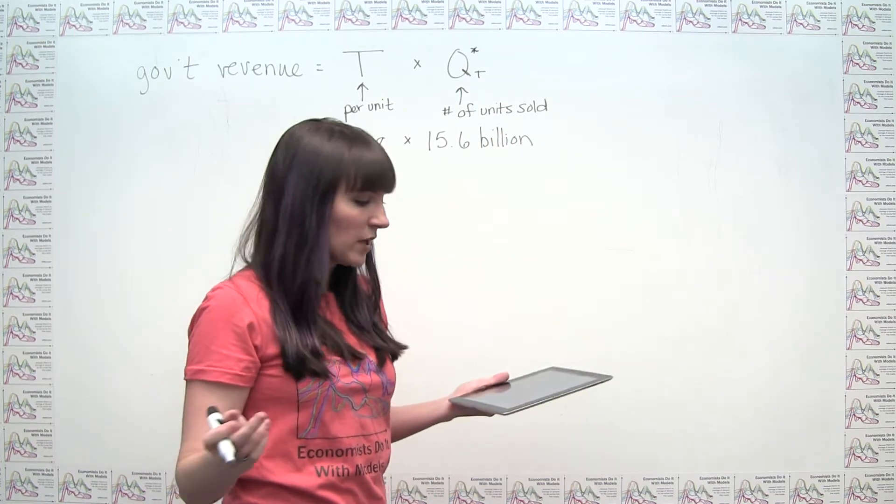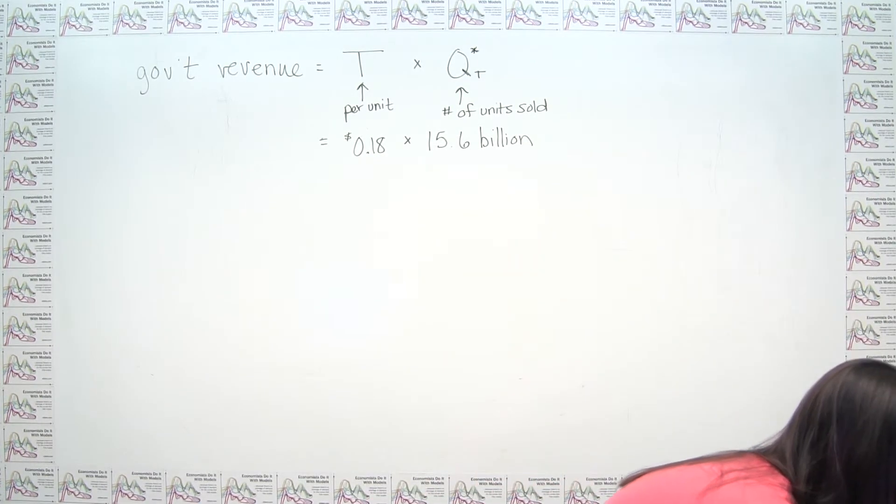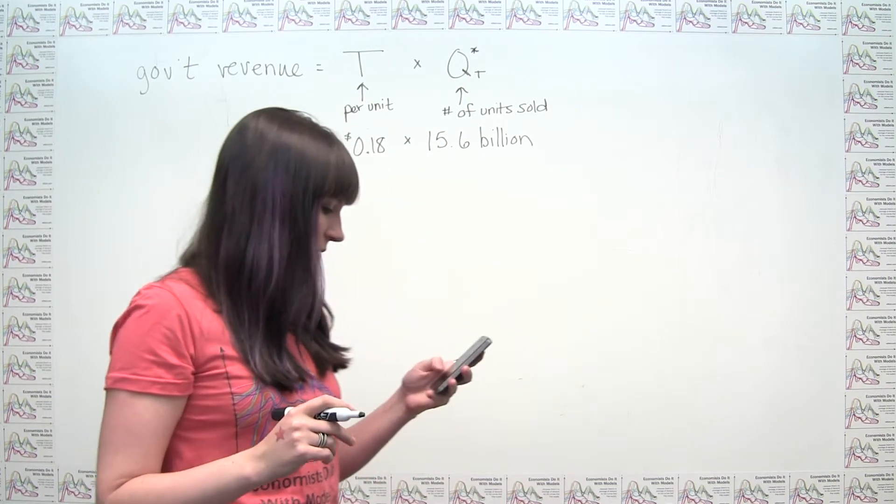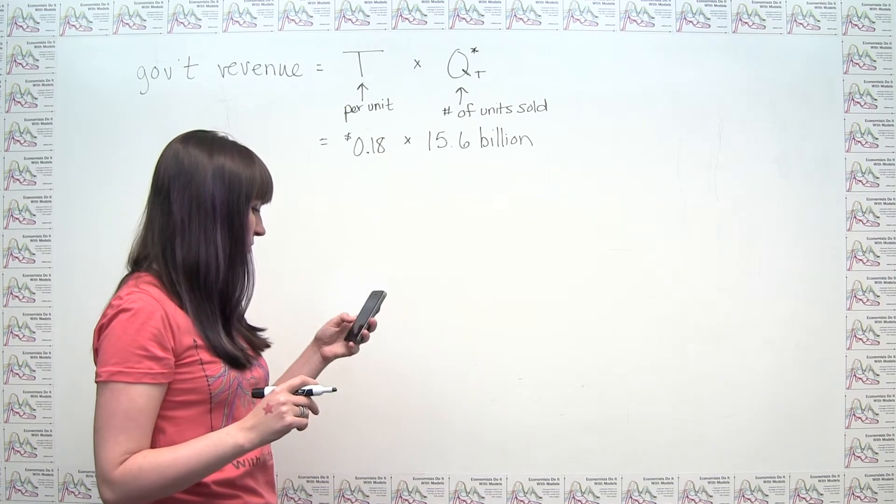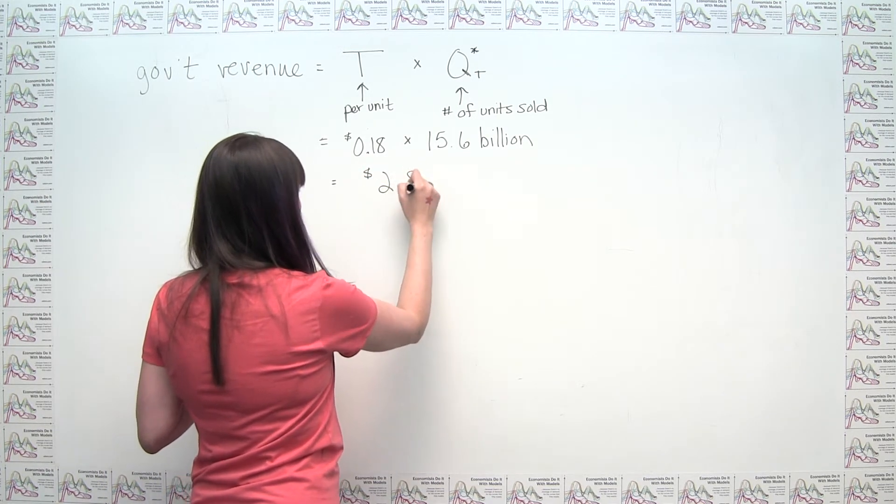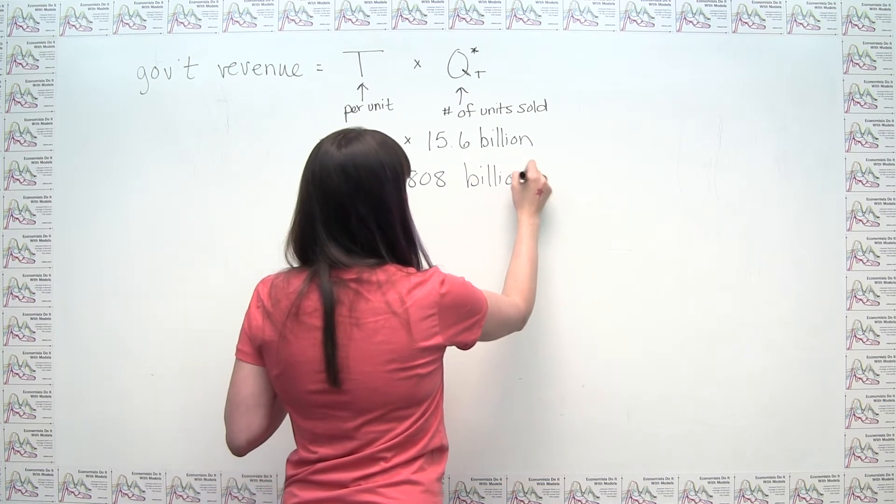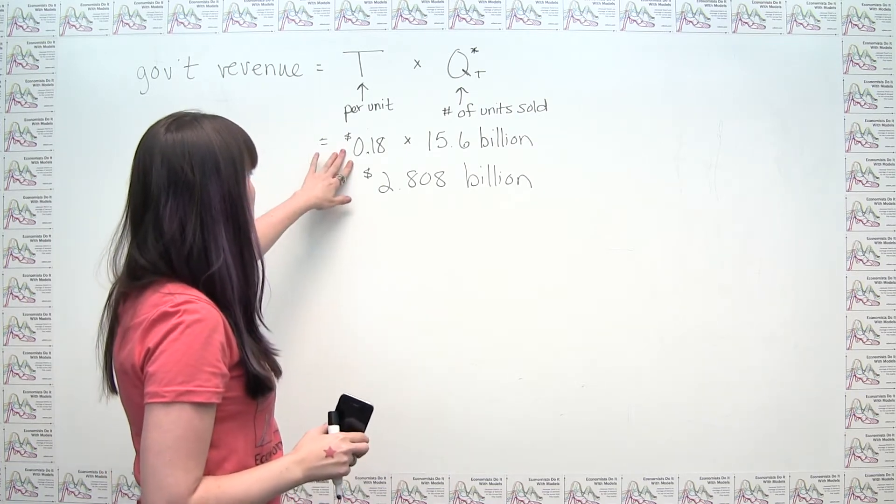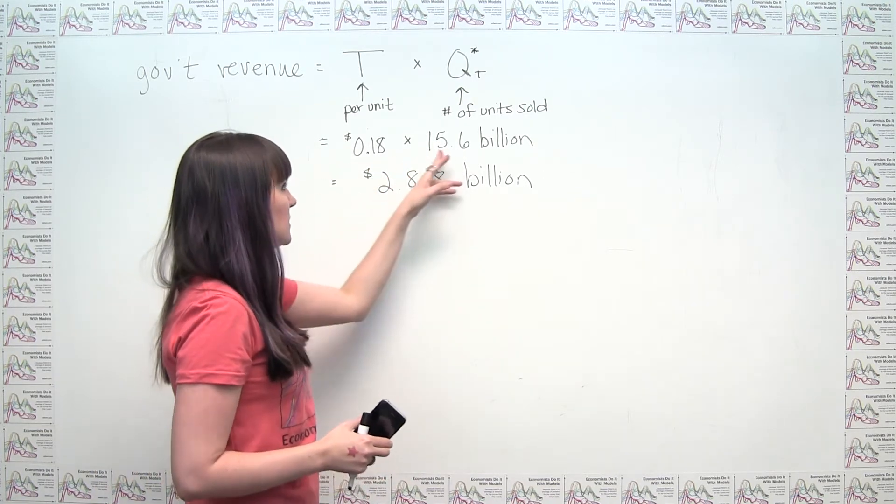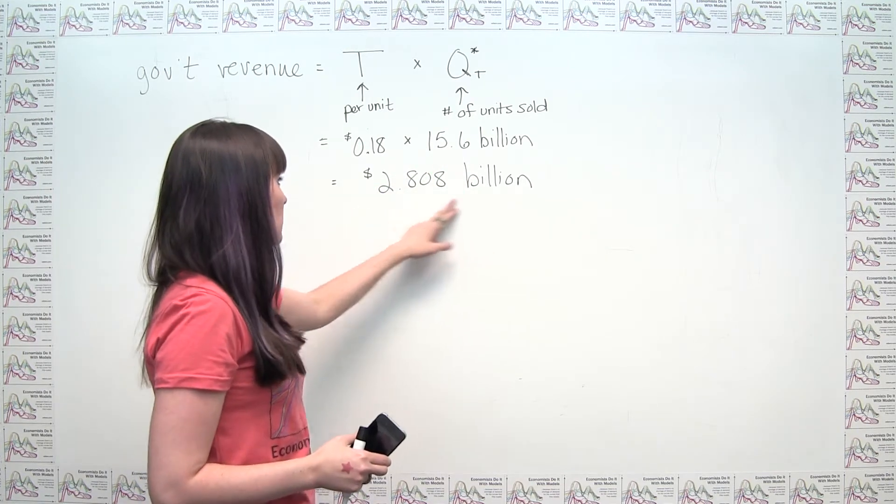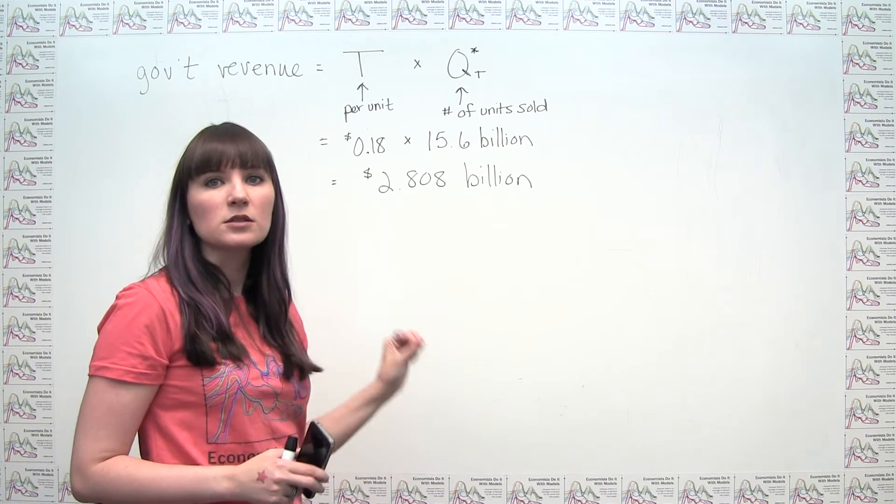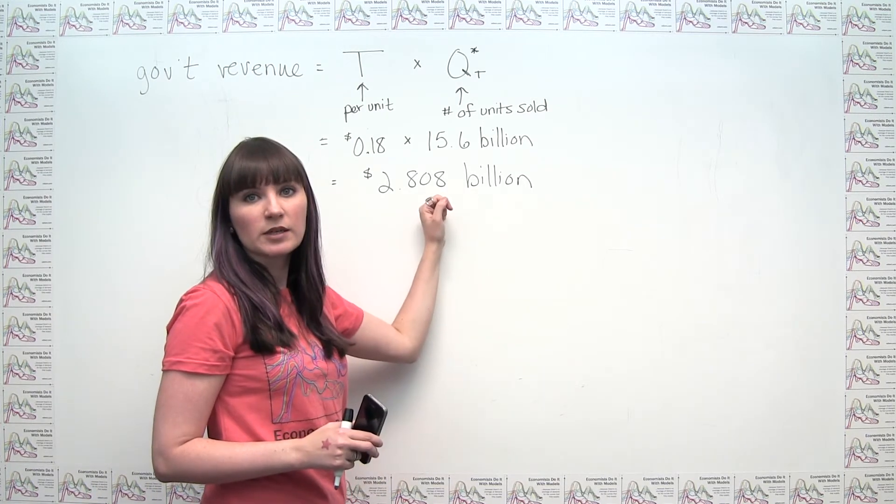And all we have to do is multiply those numbers, and get out my handy-dandy calculator here. Let's figure out what this comes out to. So 0.18 times 15.6 for now, because this is actually 2.808 billion dollars. And you could do a sanity check here, you could notice that 18 cents is about a fifth of a dollar. So we're basically dividing this 15.6 by 5, essentially. So we would get something that's in the neighborhood of 3 billion dollars, and that's in fact what we see here.